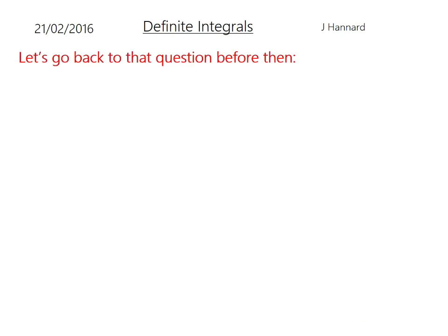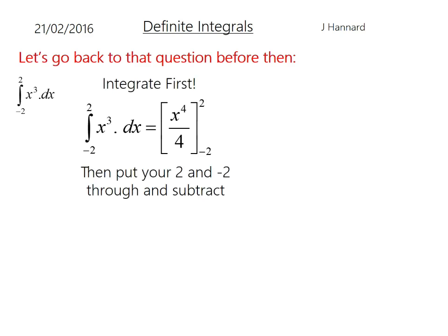So let's talk about that question before, which was that. And that seems easy enough. Let's think about that graph. Well, hold on, we'll integrate it first. Add 1 to the power, divide by the new power. Put the 2 and minus 2 through and subtract. And we'll get that, which is 0.